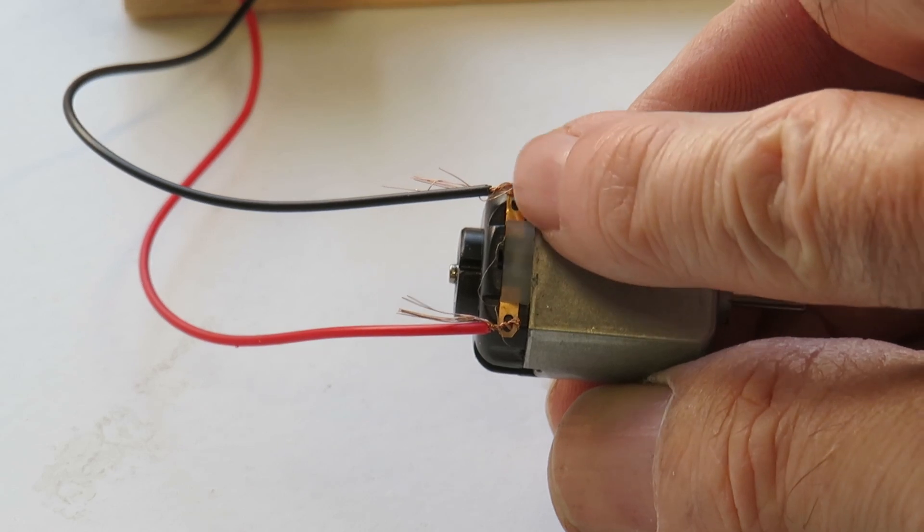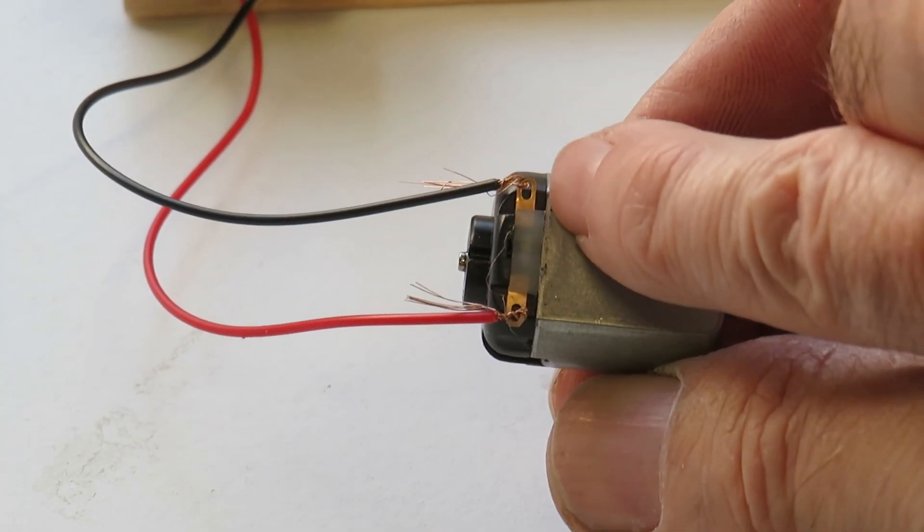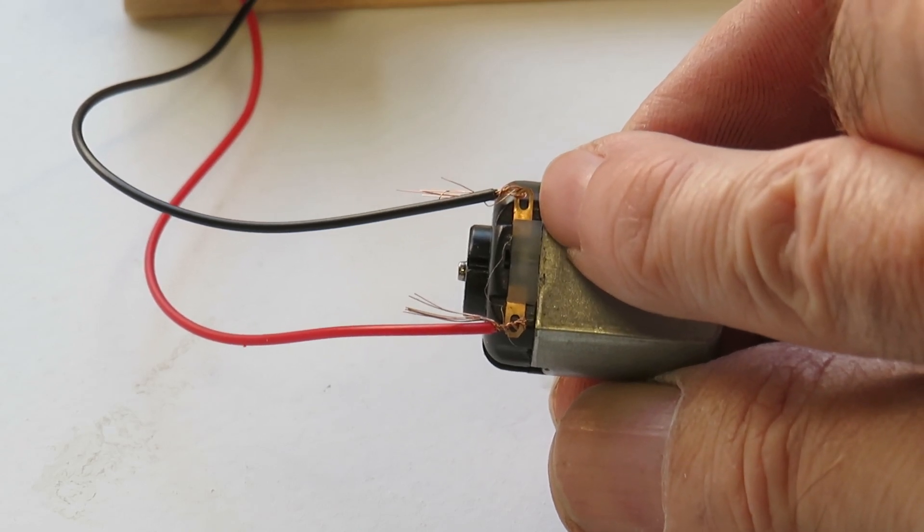Now you might be able to see that these cables are a little bit flimsy. I'm not too happy with them so I'm just going to put a little drop of solder on them. And if you haven't got a soldering iron then a little bit of glue will probably do the same job.